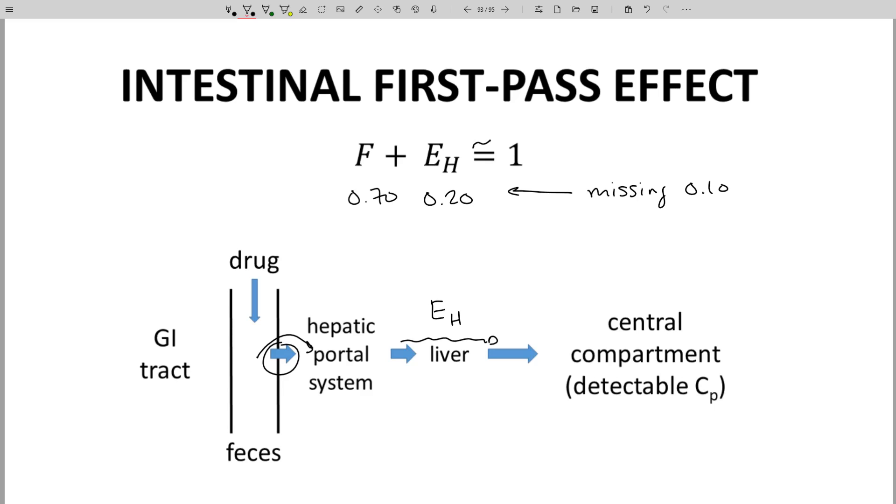Well, it has its own arsenal of metabolic enzymes, its own CYPs. Some are the same as what we find in the liver.